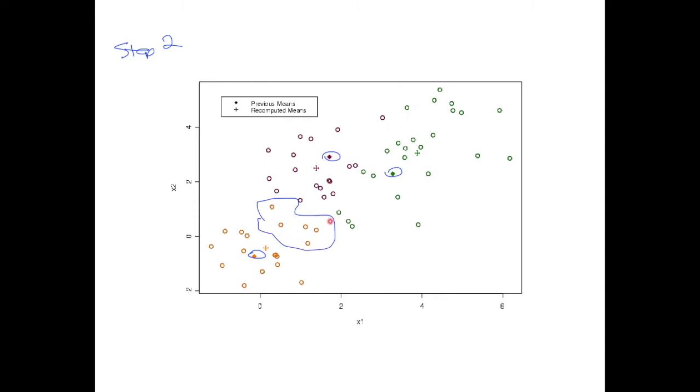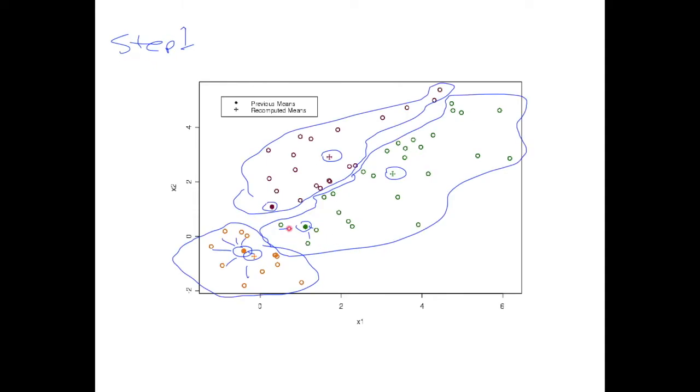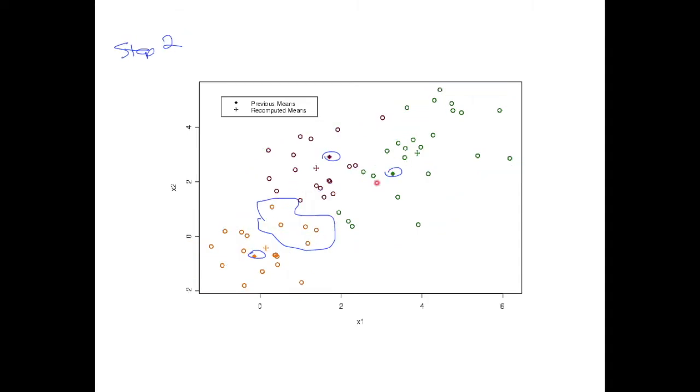So from the previous slide, these ones changed because initially these guys were set to some data points because they were closest to the means they had. But now with the new ones, they're all closest to this orange one in the bottom left. And so now they're in this class.